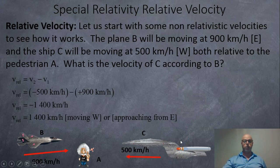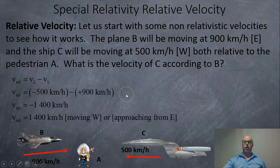We're going to do a couple examples. Let's do a non-relativistic one just to see how easy it is to do with Galilean. According to observer A, aircraft B is moving at 900 km per hour east, and ship C is moving west at 500 km per hour. You want to know the relative velocity between C compared to B.